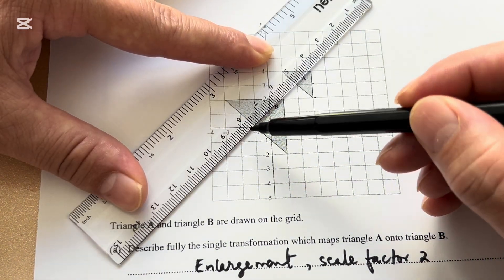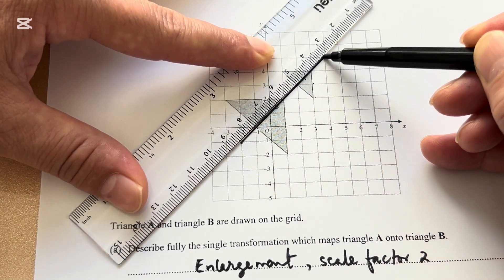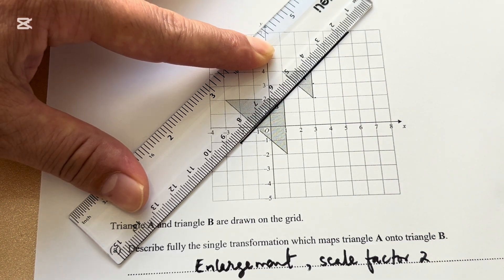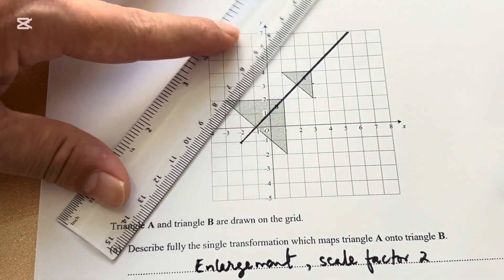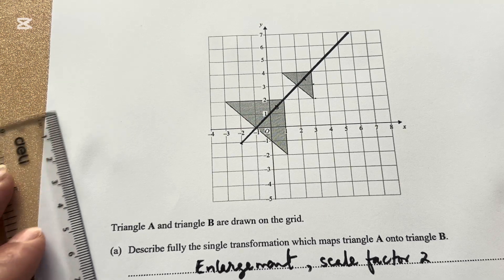You draw a line through those vertices and extend the line, because later you will come to know why we are extending.